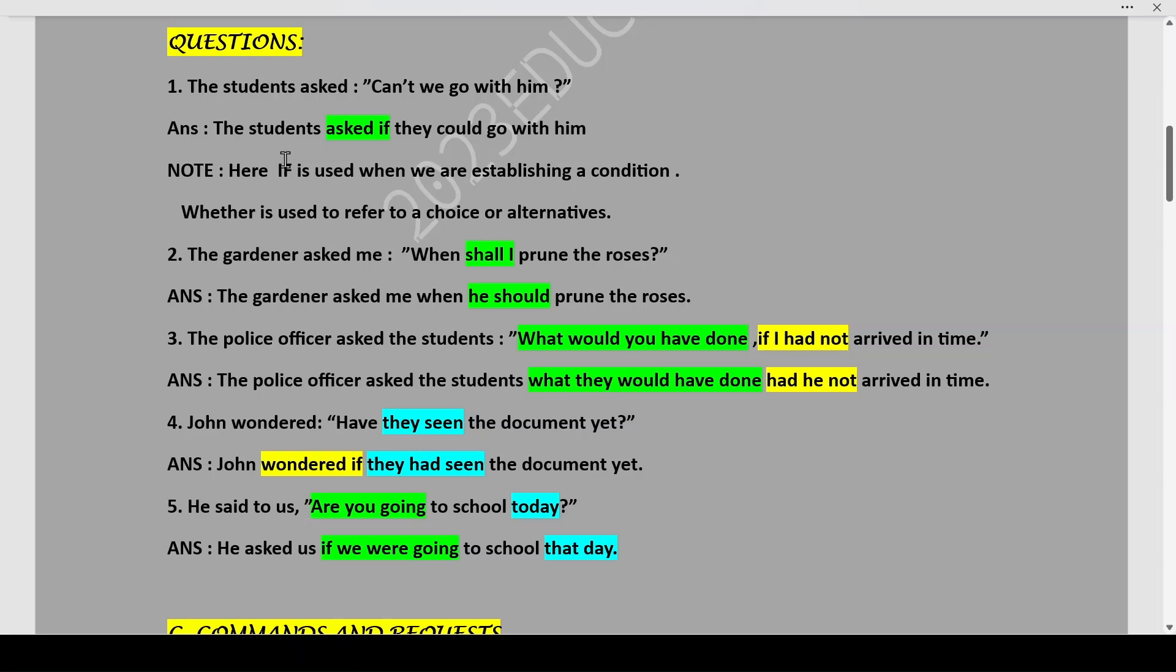Now, why don't we use whether over here? The students asked whether they could go with him. The reason for that is here if is used when we are establishing a certain condition, but whether is used when we are given a choice or alternatives. If the students ask whether they could go with him or her, then we could have used whether. If there is an option given him or her, him or them, then we will use whether. But here it is just establishing a condition that can we go with him. The students asked if they could go with him. This is what you have to keep in mind that why we are not using whether and why we are using if.